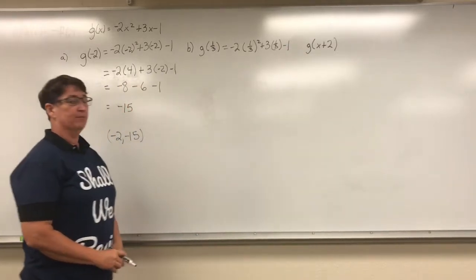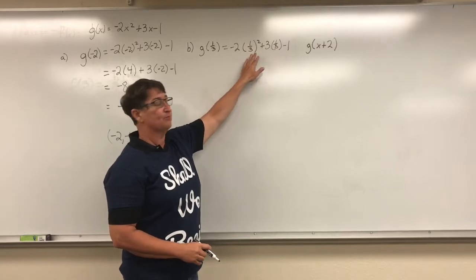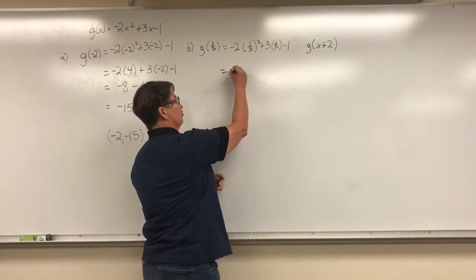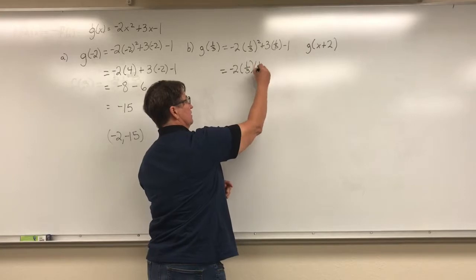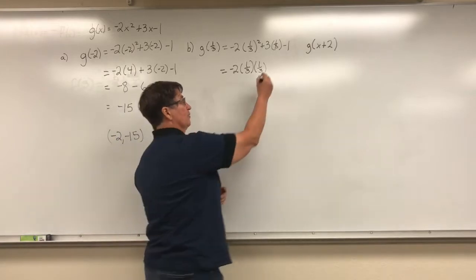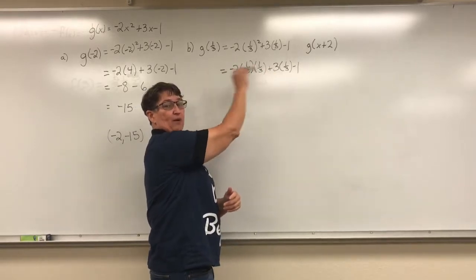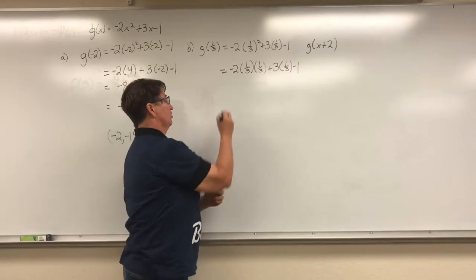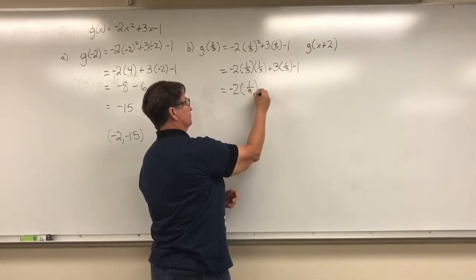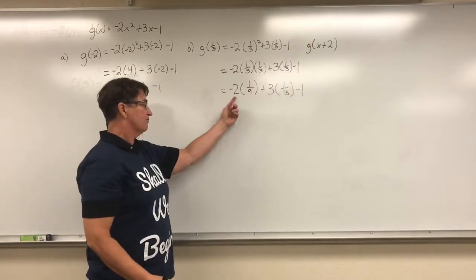And now, again, it's just arithmetic. I have to remember those order of operations — I need to square this first. Remember that squaring just means I'm multiplying this times itself. Let me write it out so you can see what that means visually. It just means I'm multiplying 1 third times 1 third. And when multiplying fractions, I just multiply straight across — the top times the top and the bottom times the bottom — so I end up with 1 times 1 gives me 1 and 3 times 3 gives me 9. Next, I'm going to do the multiplication: negative 2 times 1 ninth.